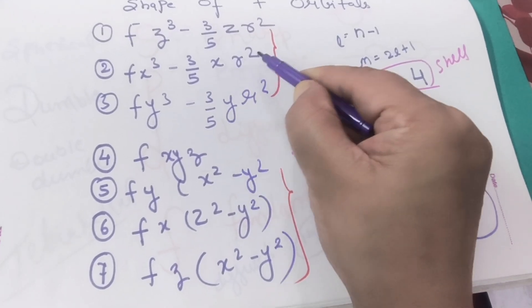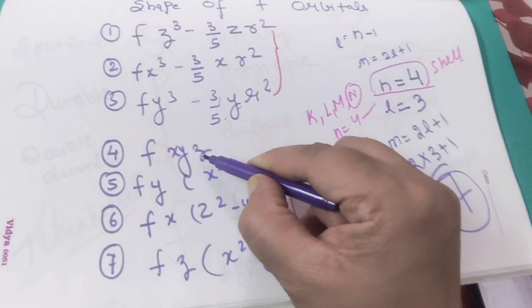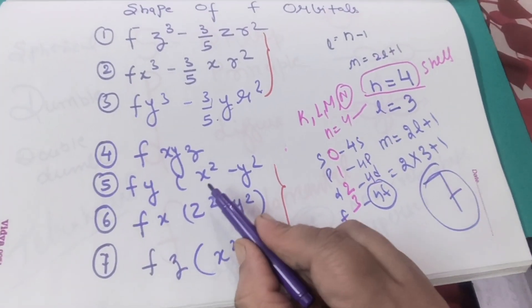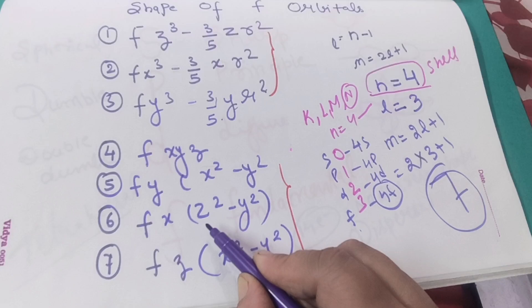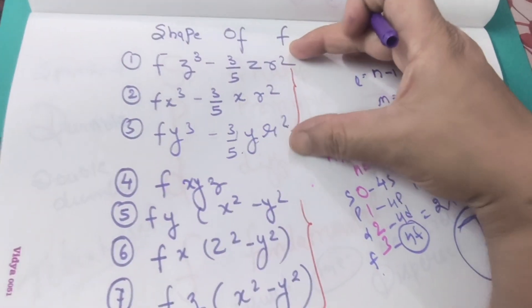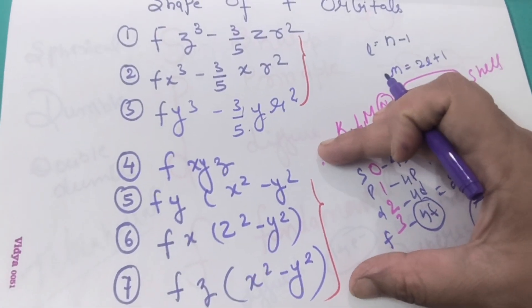The name of these seven orbitals are given here: f z cube minus 3 by 5 z r square, f x cube minus 3 by 5 x r square, f y cube minus 3 by 5 y r square, f x y z, then f y, f x, f z x square minus y square, z square minus y square, x square minus y.